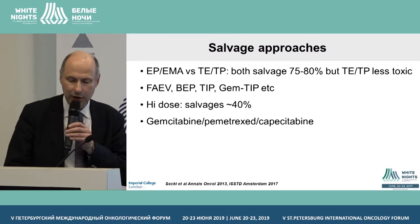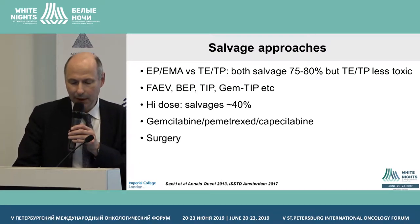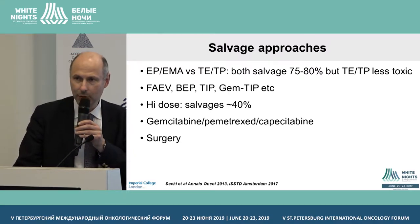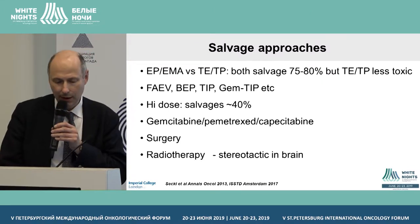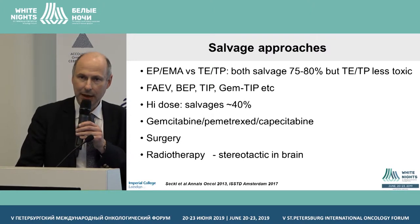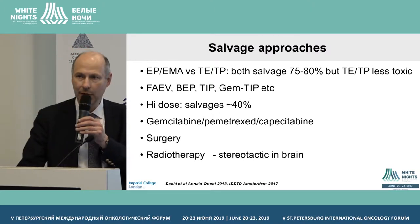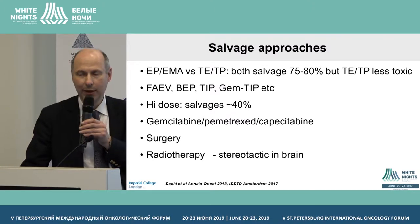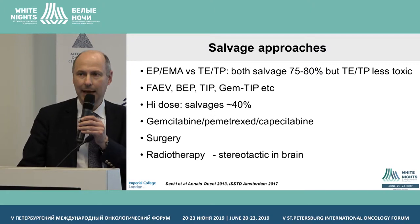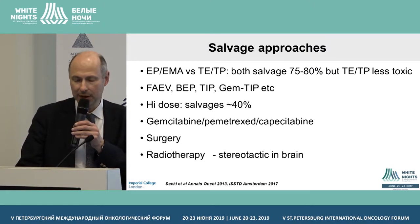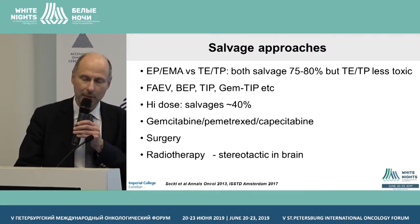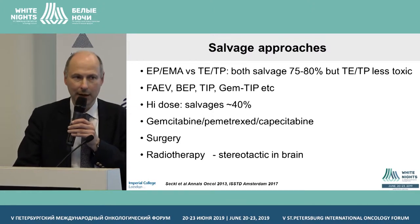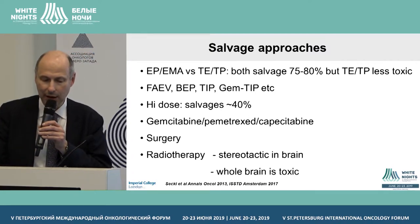There are other active drugs: gemcitabine, pemetrexed, and capecitabine. Surgery should not be forgotten - it can be very useful. Radiotherapy may also be useful, particularly for focal residual brain disease not suitable for surgical removal - stereotactic or gamma knife treatment can be helpful. I'm not an advocate of whole-brain radiotherapy because these are young women and you'd significantly add to their long-term toxicity. Non-randomized data from the US achieves no better long-term survival for brain disease than our own data where we don't give whole-brain radiotherapy.